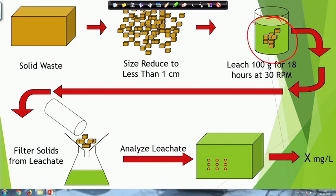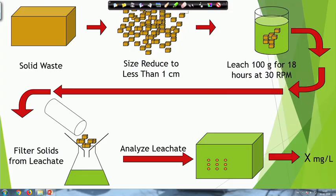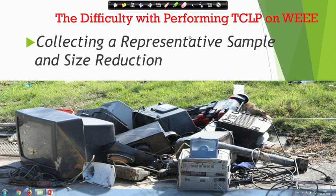Always try to understand the concept — that is more important. Different leaching conditions can use other liquids; we will talk about that later as needed. The difficulty in performing a TCLP is collecting a representative sample and doing the size reduction to less than 1 centimeter, which is very difficult.